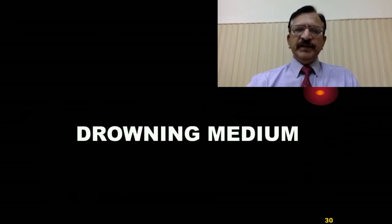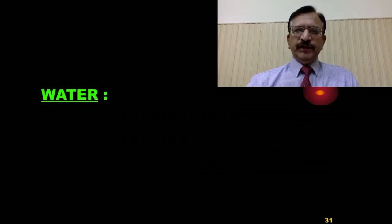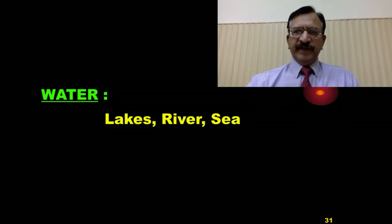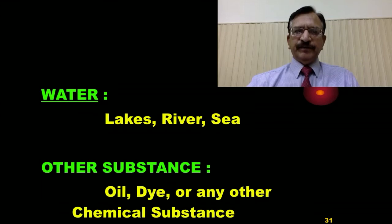Regarding the drowning medium — usually and most commonly it is water, such as in lakes, rivers, and the sea. Basically there are two types of water: fresh water and salt water, and the process of death in both mediums is different. Other substances may include, for example, oil, dyes, or any other chemical substance in which a person may fall and get drowned.